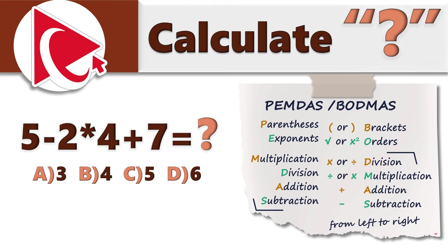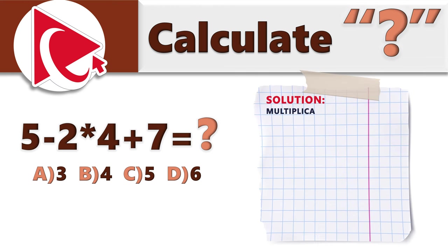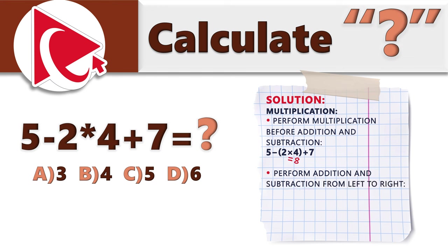Let's apply this order to the expression. We first need to do multiplication: 2 multiplied by 4 equals 8. So the updated expression is 5 minus 8 plus 7. The next operation from left to right is subtraction: 5 minus 8 equals minus 3.